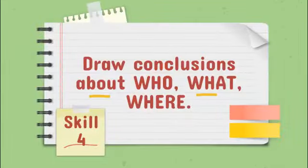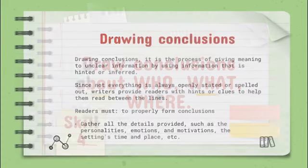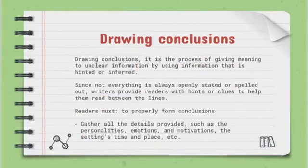Skill 4: Draw conclusions about who, what, where. Drawing conclusions is the process of giving meaning to unclear information by using information that is hinted or inferred. Since not everything is always openly stated or spelled out, writers provide readers with hints or clues to help them read between the lines.